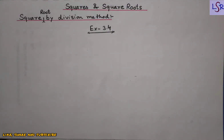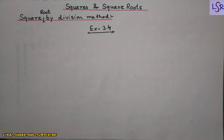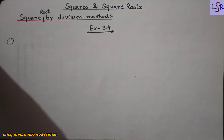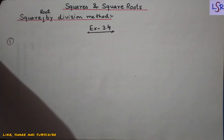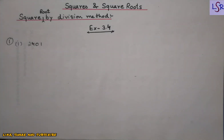Hello everyone. Here we are going to start with Exercise 3.4 of the chapter Squares and Square Roots, and deal with the questions in which we will be finding the square root by the division method. Here we will go with question number 1 and find the square root of each of the following numbers by division method. We take the first part, that is 2401.